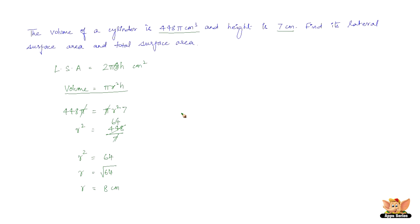Now we can find the lateral surface area. Lateral surface area = 2 × (22/7) × 8 × 7. The 7s cancel and we have the lateral surface area as 352 cm².